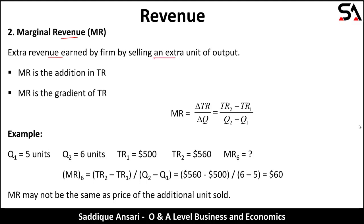Marginal revenue is the extra revenue earned by a firm by selling an extra unit. Whenever we define anything that is marginal, we use the word 'extra' or 'additional' two times. So its definition can be: additional revenue earned by a firm by selling an additional unit of output, or extra revenue earned by a firm by selling an extra unit of output.